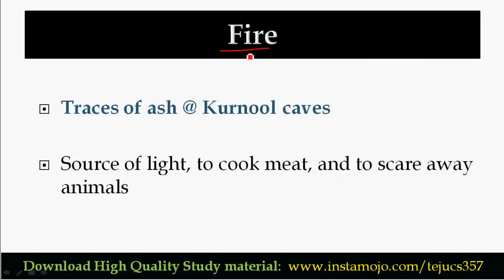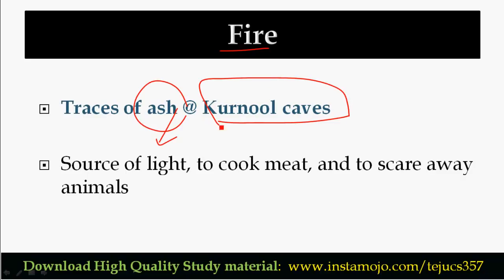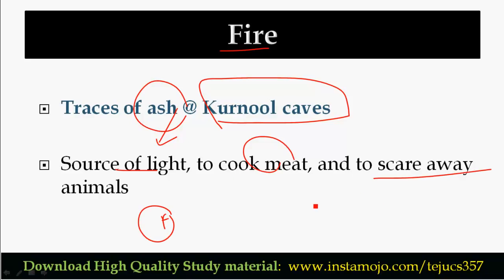The next important thing is fire. Evidence of fire includes traces of ash and wood. Fire was used as a source of light, for cooking raw meat, and to scare away wild animals.